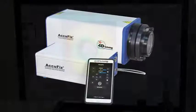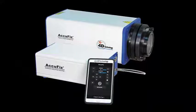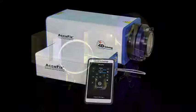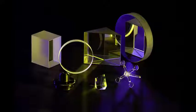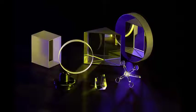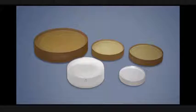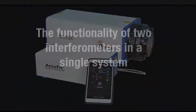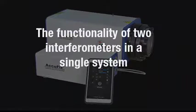The addition of the surface isolation source provides added flexibility for shop-wide measurement. Use the standard ACUFIS source to measure flats, spheres, lenses, prisms, etc. Then switch to the surface isolation source to measure plane parallel optics. It gives you the functionality of two types of interferometers in a single system.